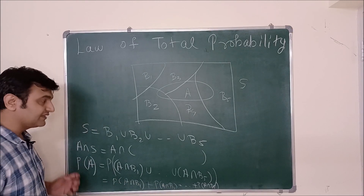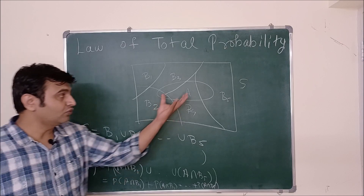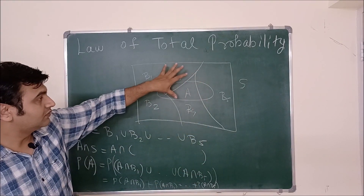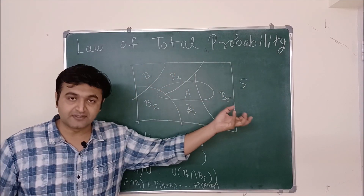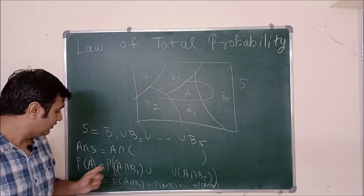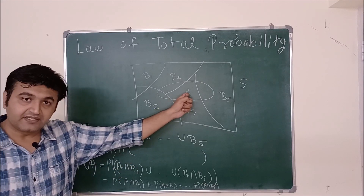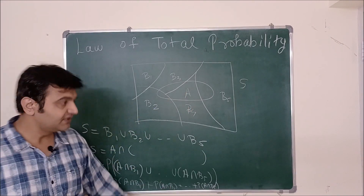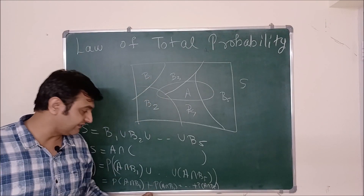This is what the Law of Total Probability says: if you want to find the probability of an event, write the sample space as a disjoint union of subsets or events, and then the probability of that event is the sum of the probabilities of its intersections with each of those subsets.